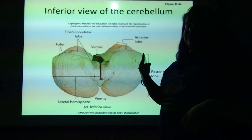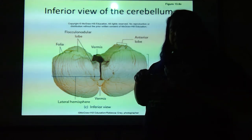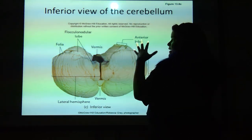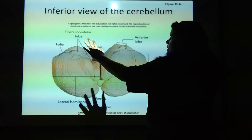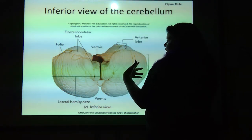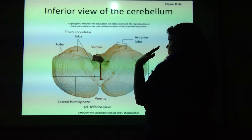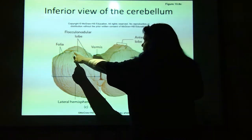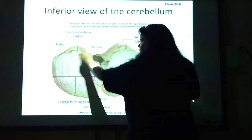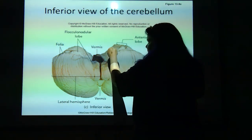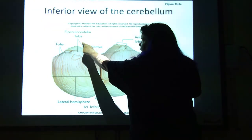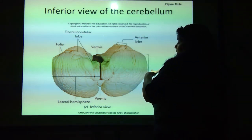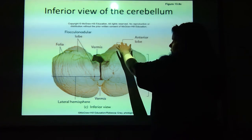Now this is inferior — you're looking at the underside of the cerebellum. Again, that vermis is still there, the connecting point between the two lateral hemispheres — left and right because you're looking from underneath. You've got the anterior lobe still, and that enfolded lobe here — the flocculonodular lobe. You still have the posterior lobe back here.